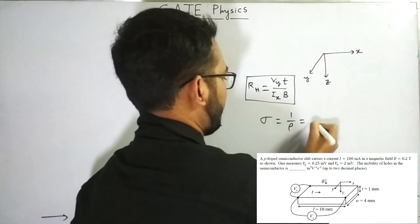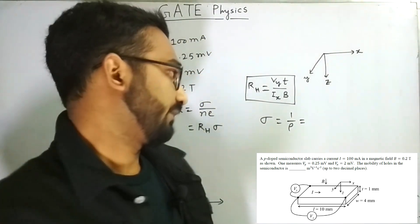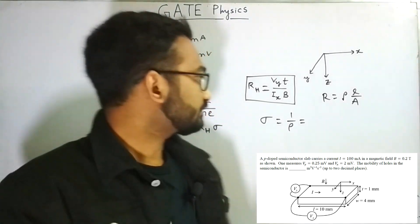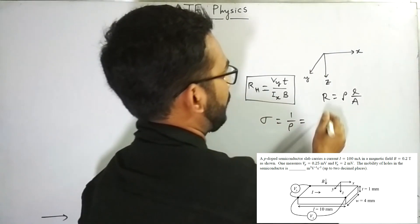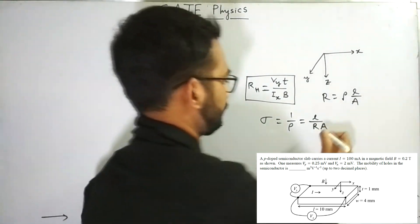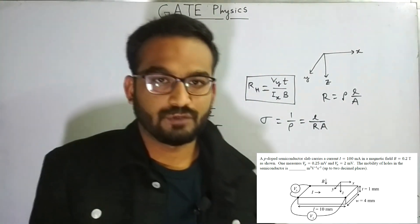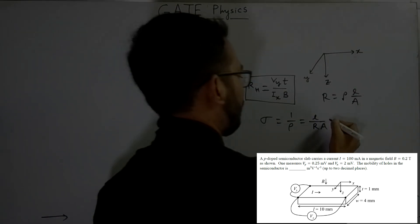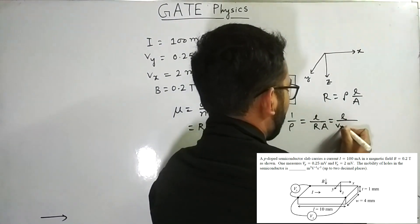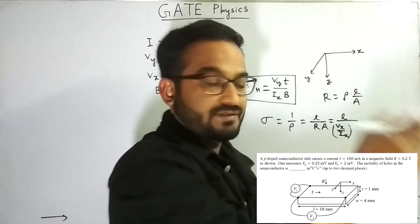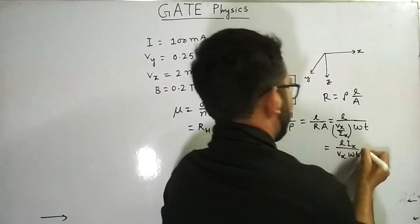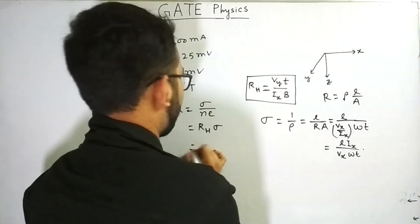For conductivity σ, it is the reciprocal of resistivity ρ. Using R equals ρL/A, we get 1/ρ equals L/(R times A). We can replace resistance R with Vx/ix, and area A with width w times thickness t. So σ equals L times ix divided by Vx times w times t. Now substituting both Rh and σ into the mobility expression gives: μ equals (Vy times t / ix times B) times (L times ix / Vx times w times t). The ix and t terms cancel.